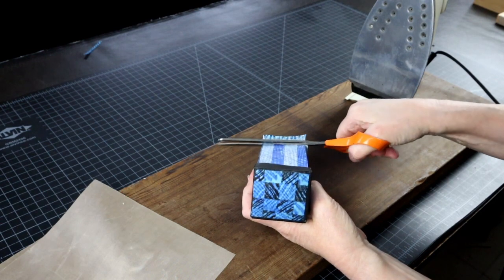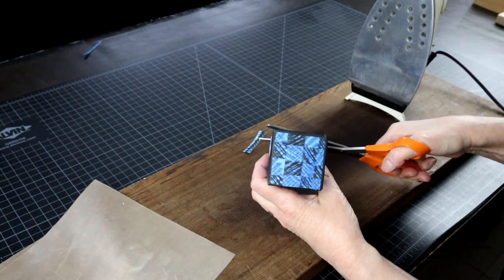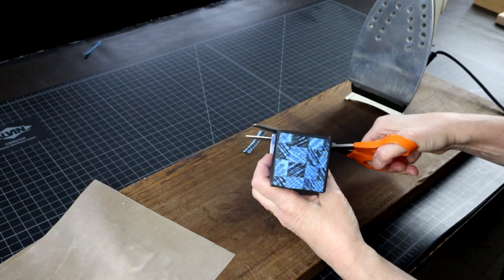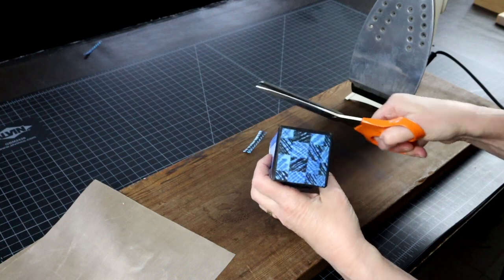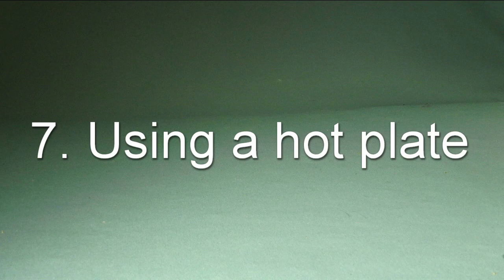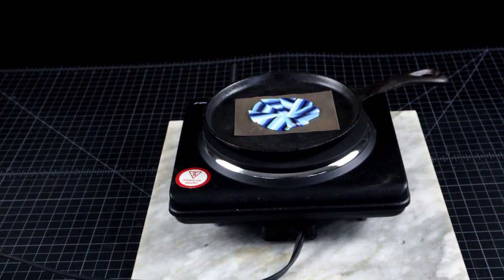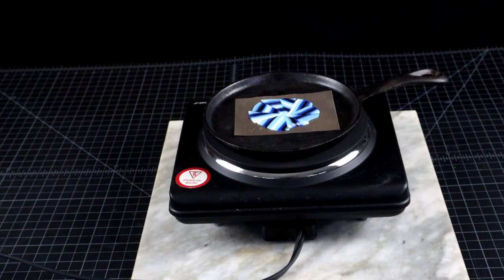I used to think, wouldn't it be nice if I had an iron that sits upside down so I don't have to hold it like this? And then I realized I actually have one. It is called a hot plate. Just watch the heat. Hot plates get way hotter than irons. So you will have to have it on medium to low depending on your stove.